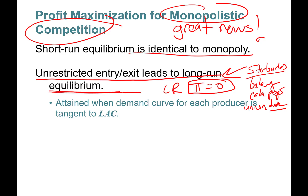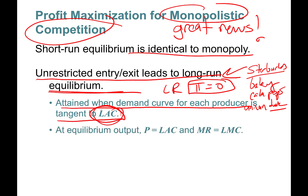Long-run equilibrium is attained when the demand curve for each producer is tangent to its long-run average cost curve. At equilibrium, price is exactly equal to the long-run average cost, and marginal revenue equals marginal cost.